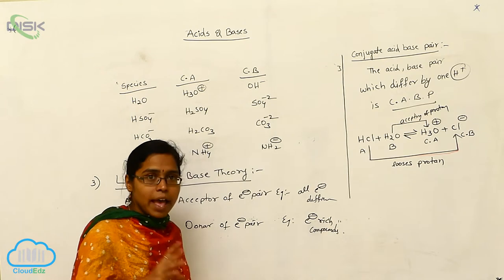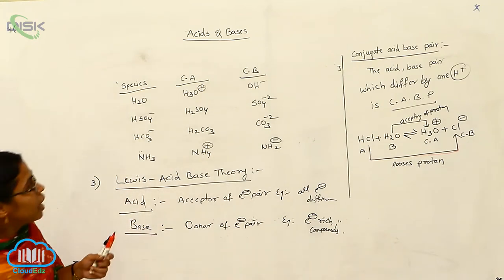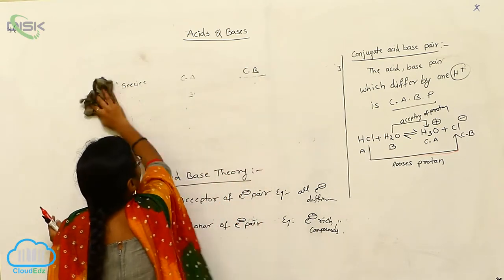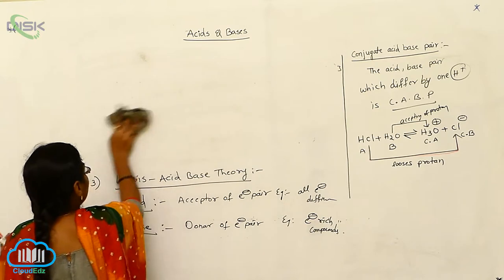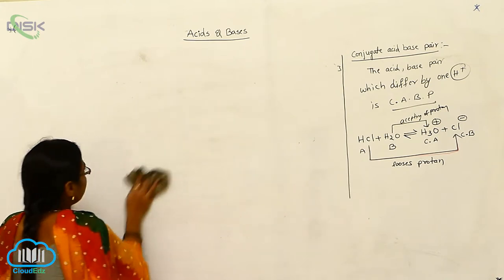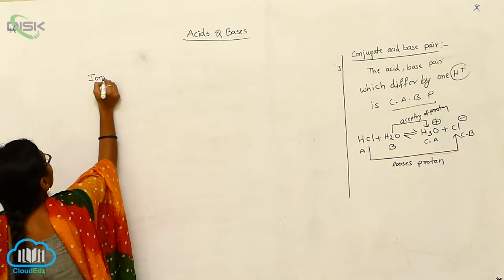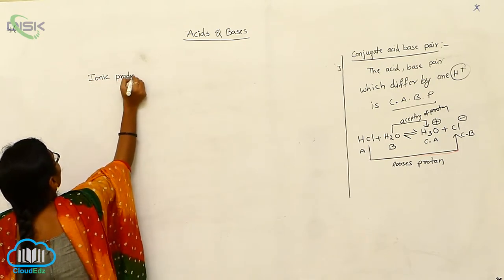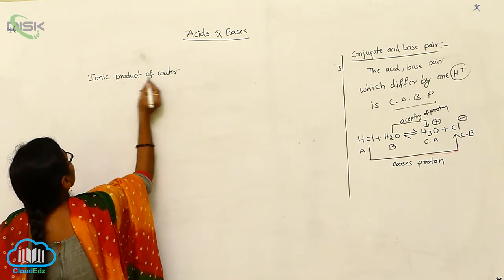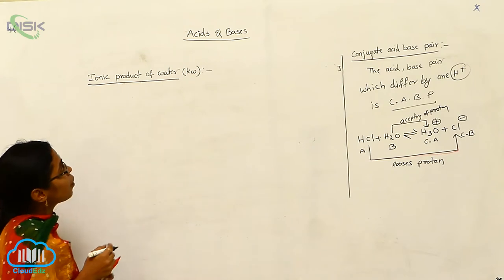For the introduction to acid-base, we covered three theories: number one Arrhenius theory, number two Bronsted theory, number three Lewis acid-base theory. Next we are entering into the topic of ionic product of water, indicated as KW.